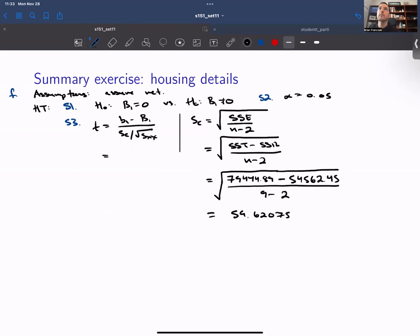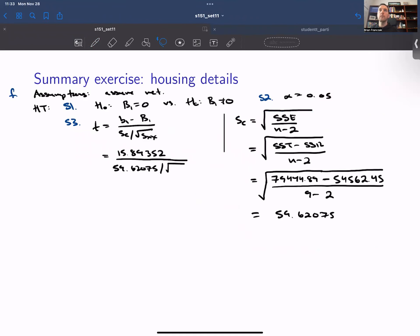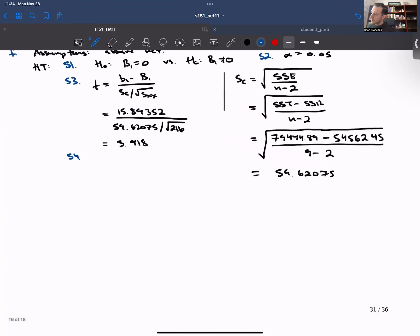So our t value is going to be 15.89352 divided by 59.62075 over the square root of sxx, and the square root of sxx which we calculated before is 216. So this gives us a test statistic of 3.918.